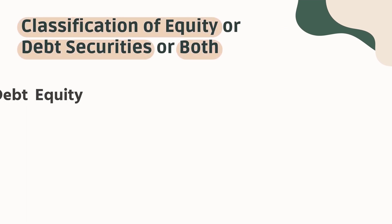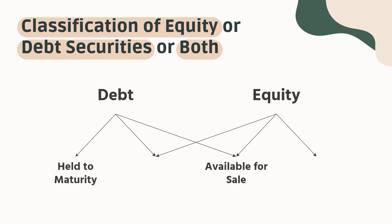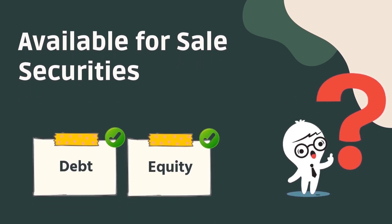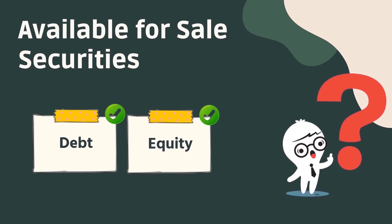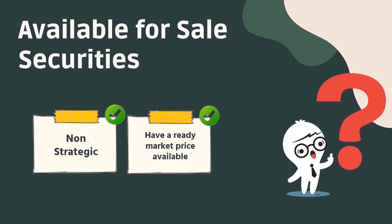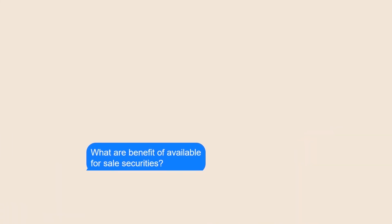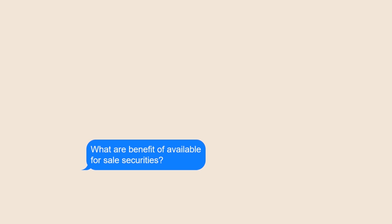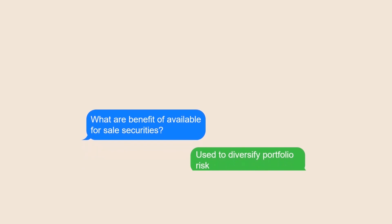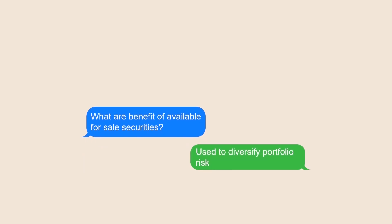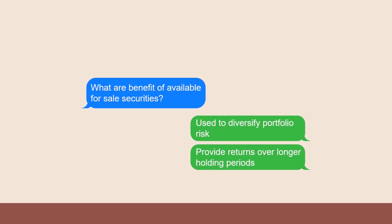Classification of equity or debt securities includes held to maturity securities, trading securities, available for sale securities, and equity method securities. Available for sale securities will be explained further in this video. They may include equity and debt securities, and are in between trading and held to maturity securities. Furthermore, they are non-strategic and can usually have a ready market price available. AFS securities are not bought or sold for the sole purpose of realizing a short-term capital gain. They may be purchased as tools to diversify away some of the risks that a company's investment portfolio currently carries, or bought with the intent to be held for the long term rather than realizing a quick capital gain.